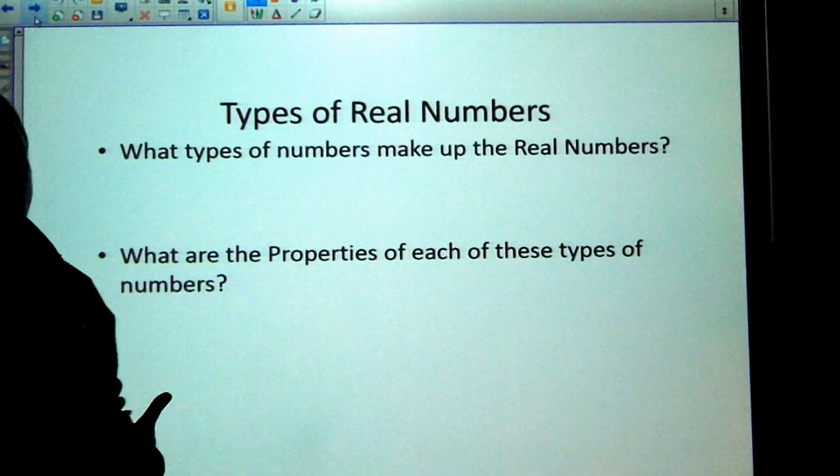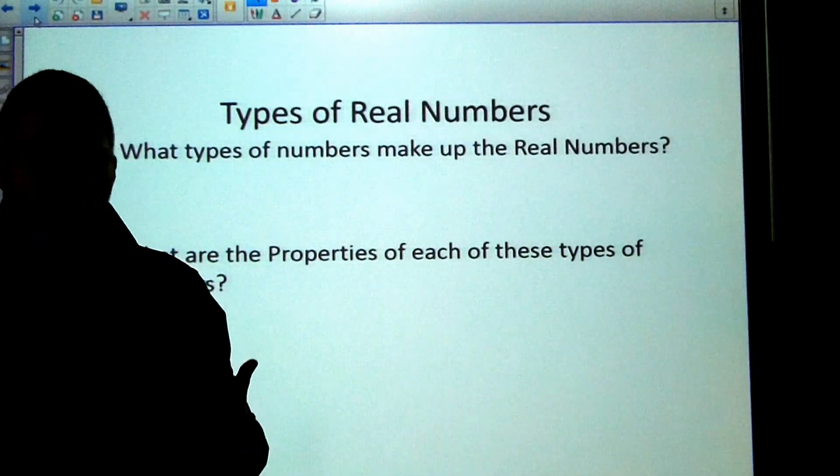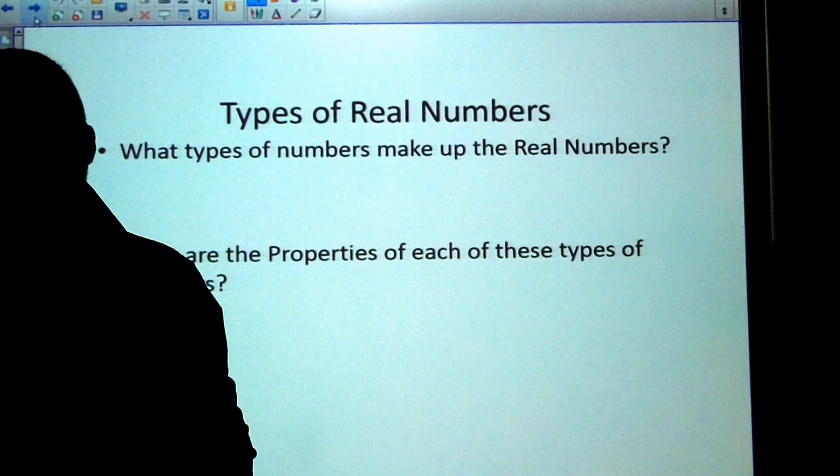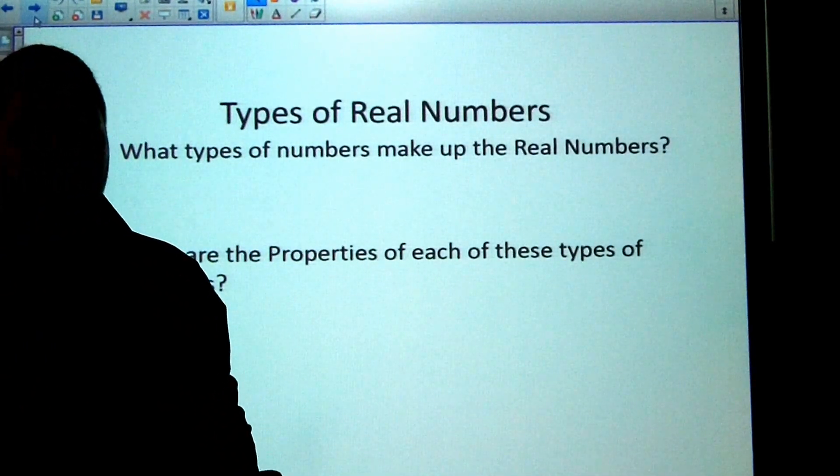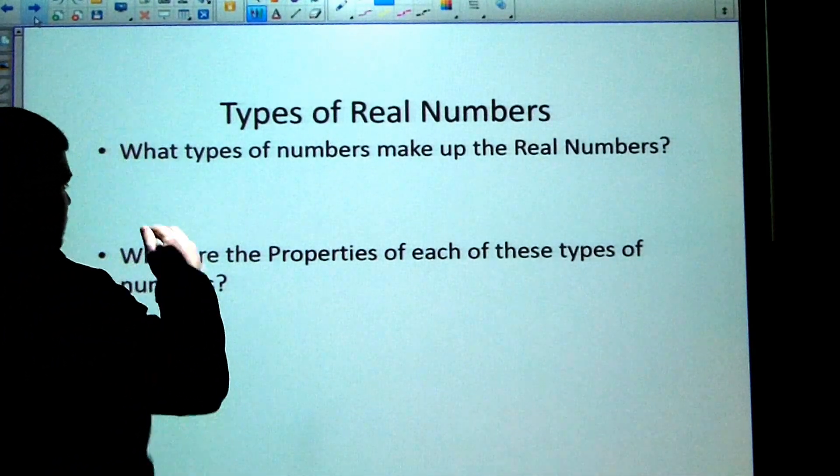There are different types of real numbers. They start off with the natural numbers, go on to the whole numbers, then the integers, then the rationals, and then the irrationals. All of those are important to us, so we're going to start off with the natural.